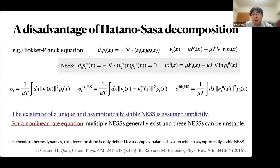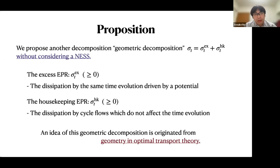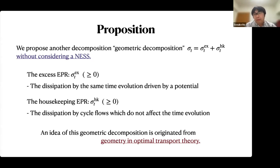In chemical sound dynamics, we can have multiple non-equilibrium steady states, and these steady states can be unstable. So the conventional decomposition is only defined for the very special case where an asymptotically stable non-equilibrium steady state exists. I would like to propose another decomposition — a geometric decomposition — without considering a non-equilibrium steady state. In our decomposition, excess entropy production rate means dissipation by the same-type evolution driven by a potential.